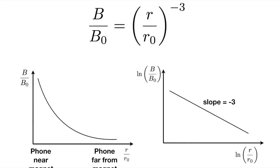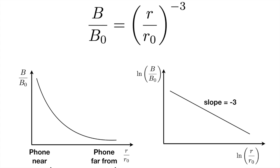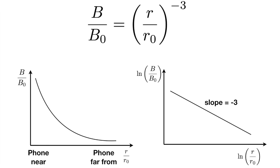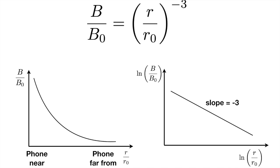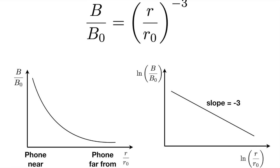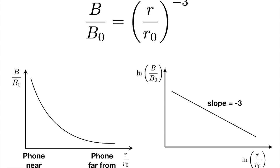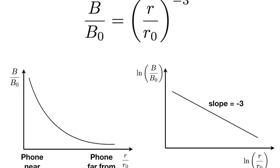The theory we'll use is the magnetic field of a dipole magnet. The magnetic field, relative to a fundamental measurement, drops off like the separation between the dipole magnet and the magnetometer raised to the negative three power — an inverse cubic relationship. The graph shows this relationship, where small values of R over R-naught represent when the phone is near the magnet, and large values represent when the phone is far from the magnet, with the magnetic field dropping off.